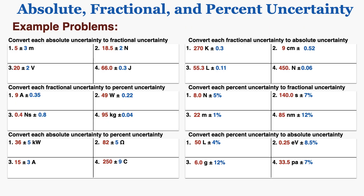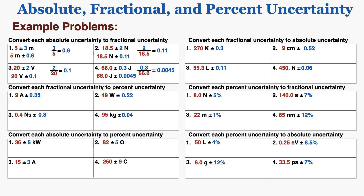The rest of the video covers example problems converting between different types of uncertainty. Starting by converting each absolute uncertainty to fractional uncertainty: divide each absolute uncertainty by its original number and rewrite it as a decimal. I can then rewrite these values with fractional uncertainty — the numbers stay the same, the unit moves next to the number, and I write the fractional instead of the absolute uncertainties.